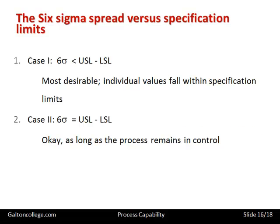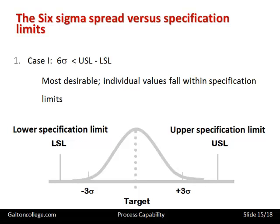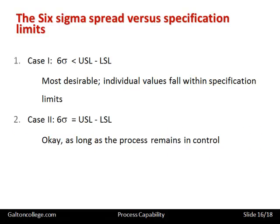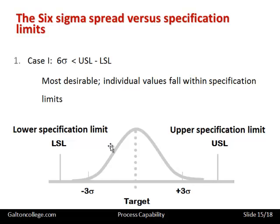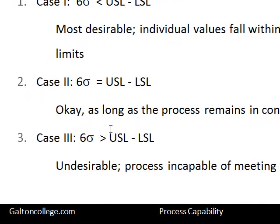In the second case, the lower and upper specification limits move until they are just at minus three sigma and plus three sigma. So six sigma equals the difference between the upper specification limit and the lower specification limit — that's acceptable, as long as the process remains under control. Finally, the third case is when six sigma is greater than the difference between the upper and lower limits. This is the undesirable situation — the process is incapable of meeting the specifications. In this case, the specification limits fall within the six sigma range, meaning the variation is too great and that is not acceptable.